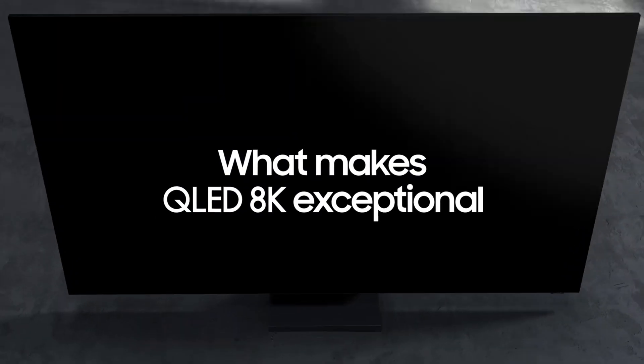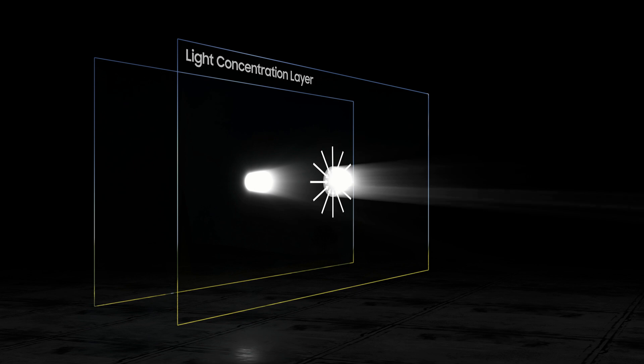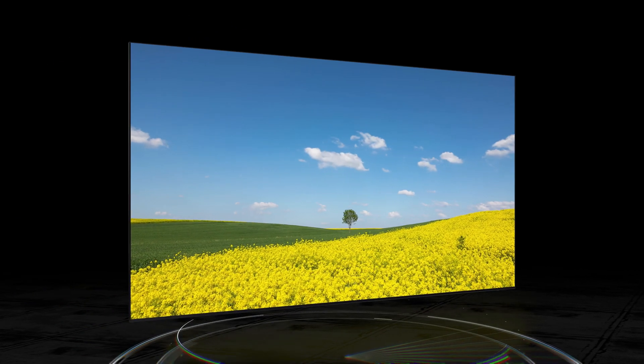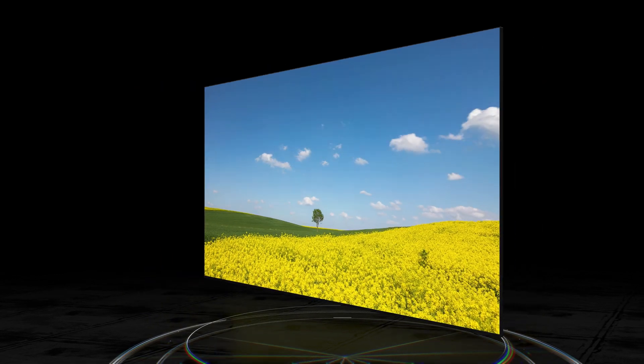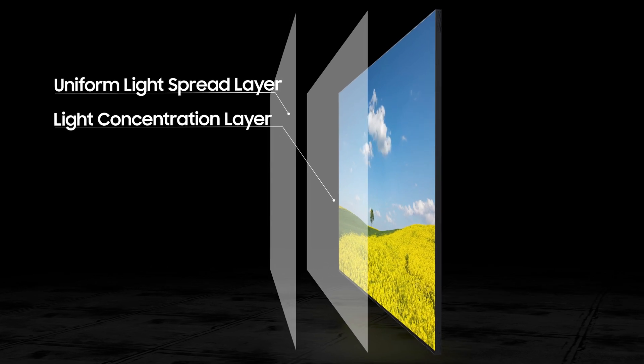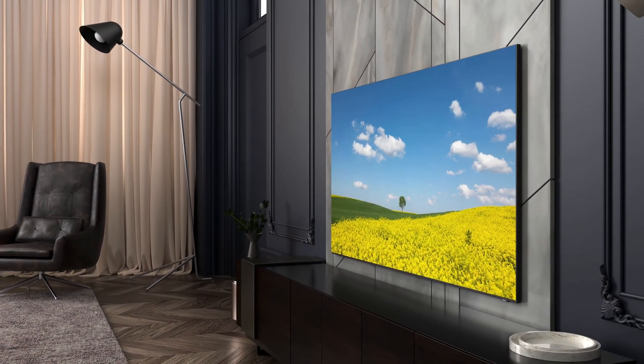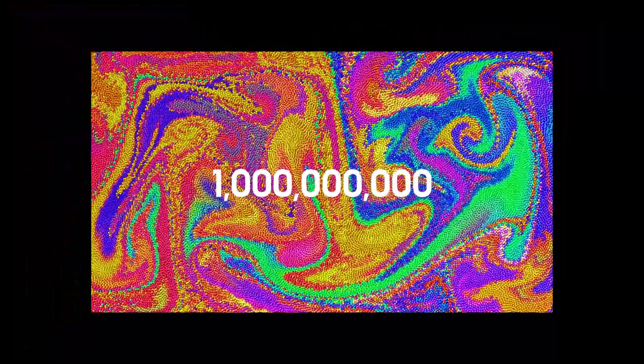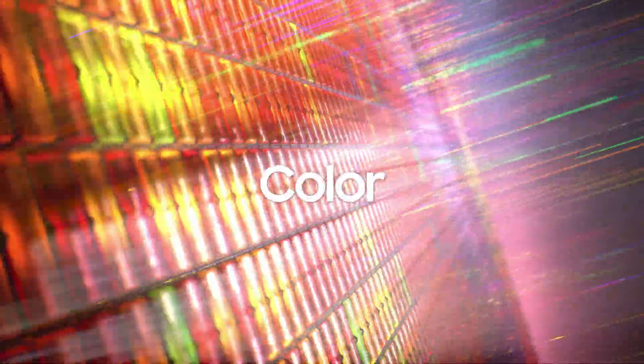One way of doing this is by laminating the quantum dot layer onto the front glass of the backlight, while also manipulating and honing light through the panel with additional filters. This, coupled with increased brightness, provides a wider viewing angle as well. But where the quantum dots really shine are in their clarified color production, providing the capability to access billions of colors maintained at peak brightness levels, leading to a greater color volume than traditional LCD panels.